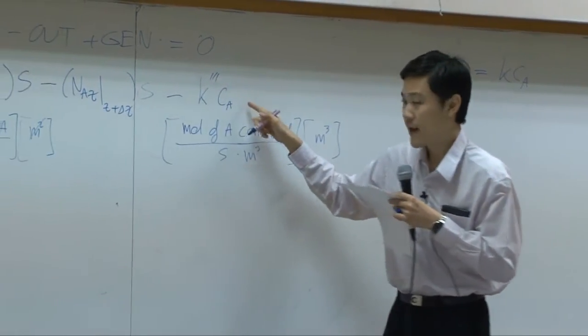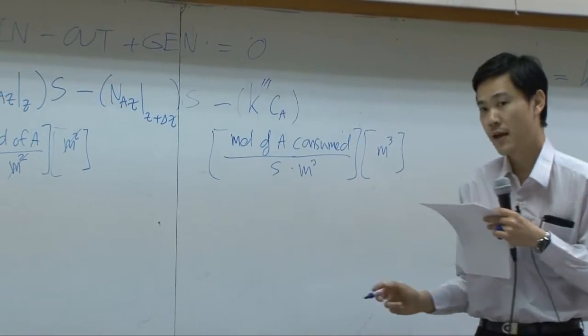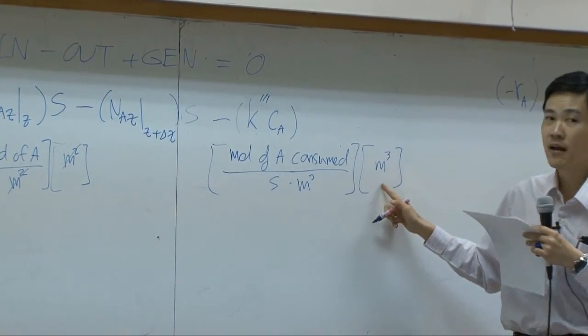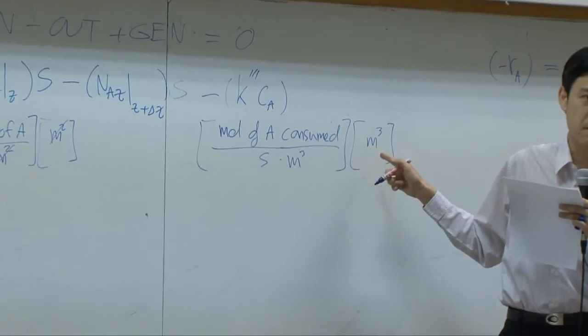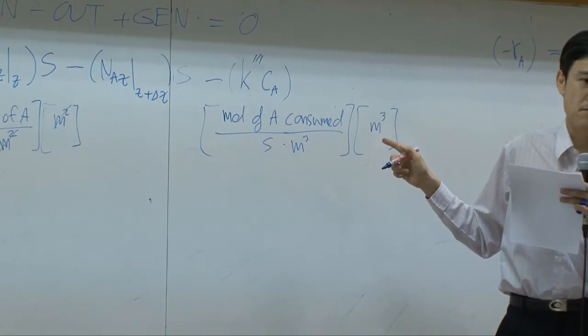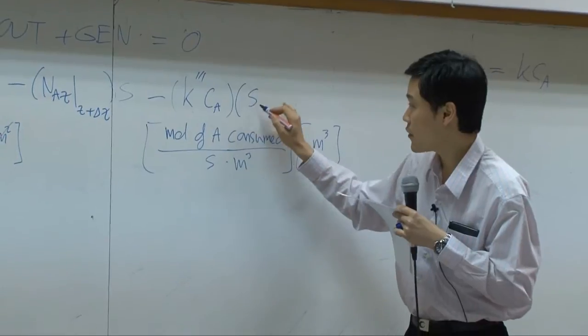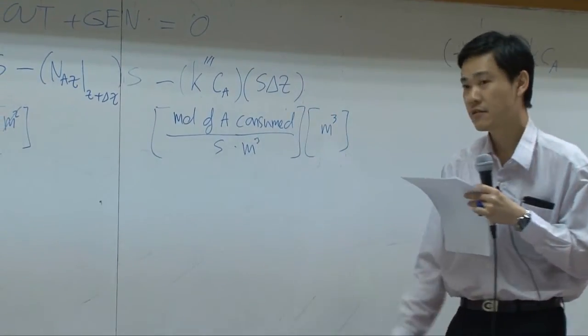So this is red, this part is red, and then you need to multiply by volume. What is the volume? It's supposed to be volume of the shell itself, S delta Z.